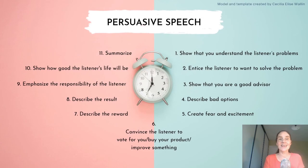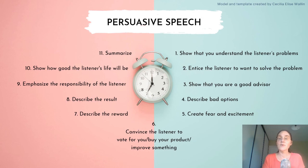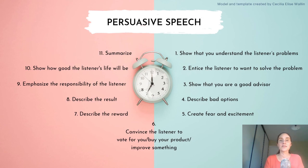And here we have the model again. If you are giving a long speech, you can go through all these steps several times — we often see this in political speeches. Like a clock, you can go through these steps several times to really emphasize your message. That was all. I hope you got something out of watching these two videos — this is part two. If you haven't watched part one yet, I will link to it in the top right corner of this video. In part one I talk about this model and give some examples of how you can use it.